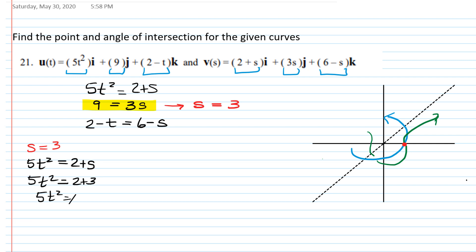So 5t squared is 5, so t squared is 1, so t could be either positive or negative 1. On the other hand, if I plug s equals 3 into the equation 2 minus t equals 6 minus s, we have 2 minus t equals 6 minus 3, which means 2 minus t equals 3, so negative t equals 1, which means t equals negative 1. So we cannot use t equals 1 because it wouldn't satisfy the other equation. So we have to use t equals negative 1.